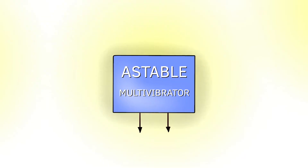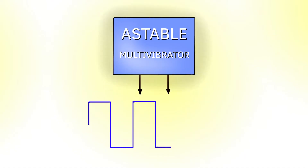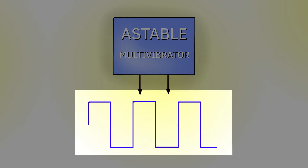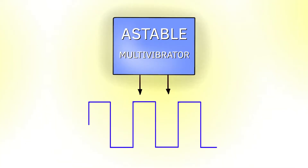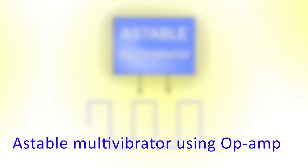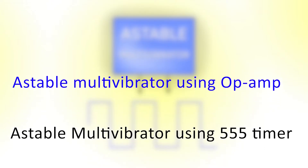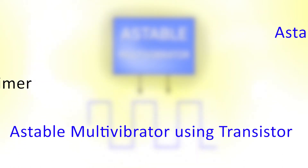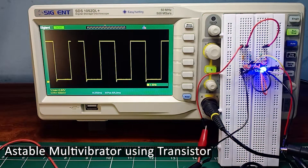An astable multivibrator is a circuit that can produce a square wave. The name 'astable' means that the output is not stable in any state. There are different ways to build an astable multivibrator circuit, but in this video I will focus on a transistor-based astable multivibrator circuit.